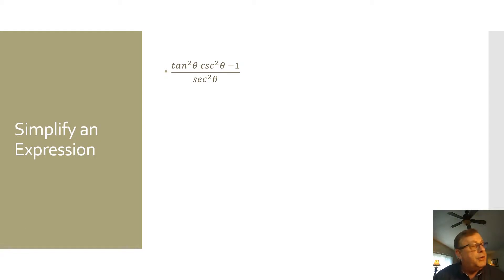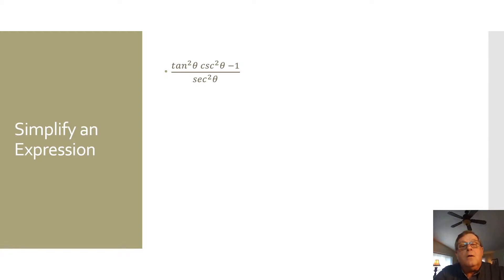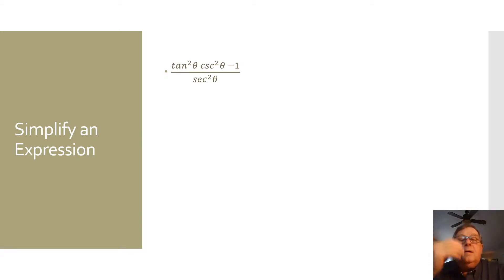Shall we use trigonometric identities to help us simplify an expression? We're going to take this bit by bit.